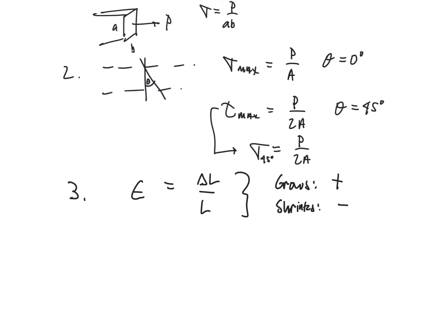The shear strain, gamma, is equal to the change in angle, we'll call it the delta theta, between two originally perpendicular lines. And this has to be in radians, remember that.